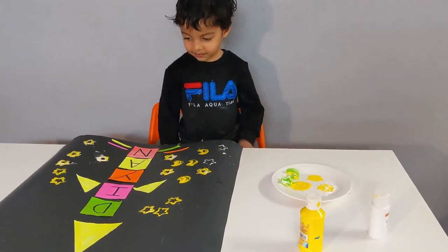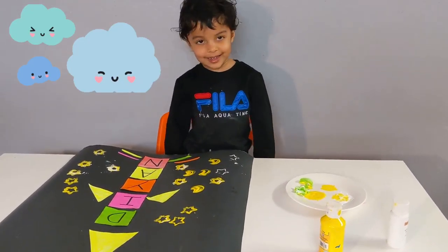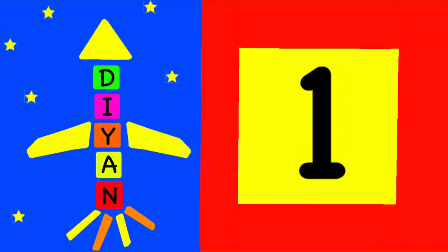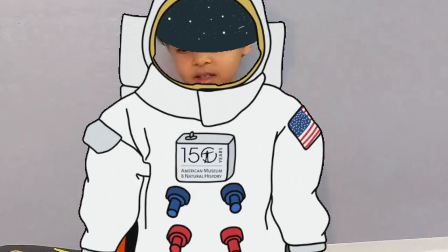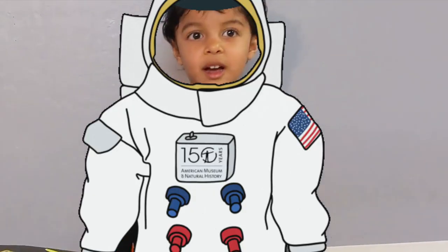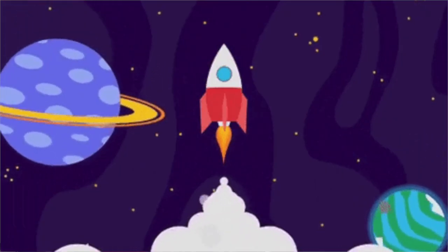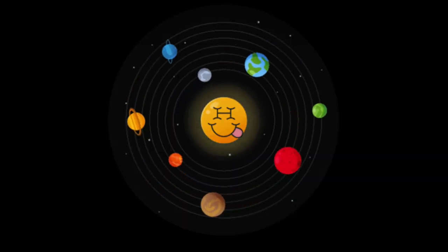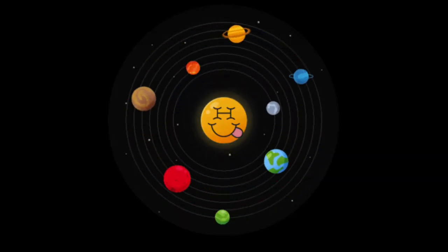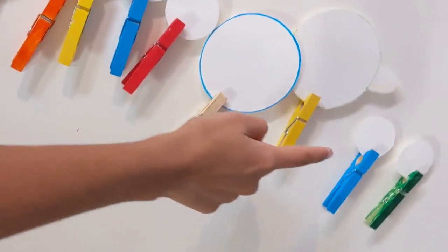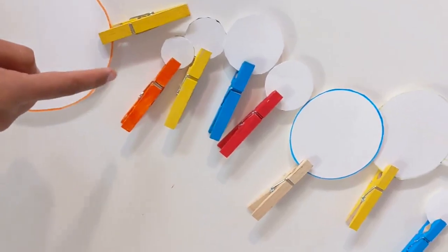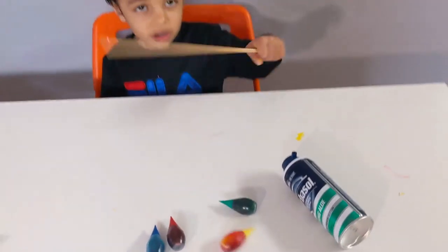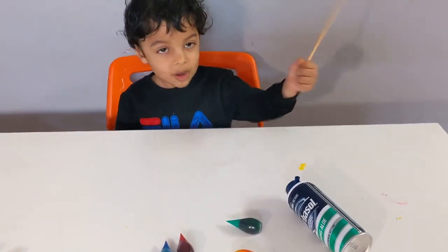Rocket, rocket goes up in the sky! Who sits in the rocket Deyan? Astronaut! And in the rocket, where do you visit in the space? Planets! Good! So do you want to make some planets now? Yes! Now let's start our planet craft, alright?